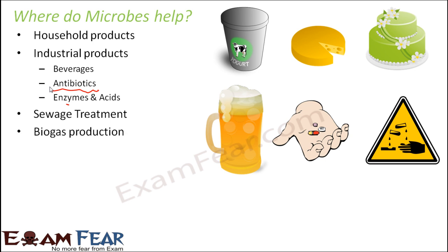Biogas production is another area. Biogas, often termed as gobar gas, is a renewable source of energy which can be utilized for different purposes like cooking or lighting. You would have studied about this in earlier classes. This biogas production is also done with the help of microbes.